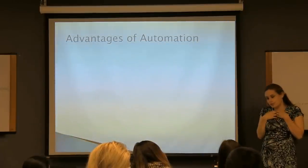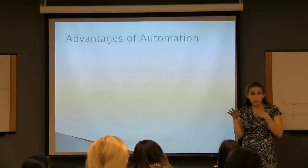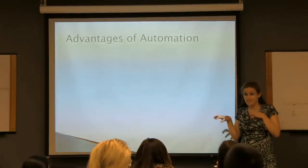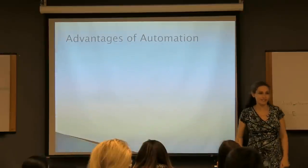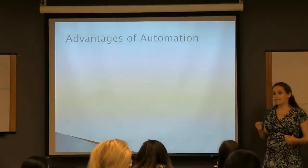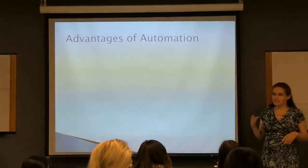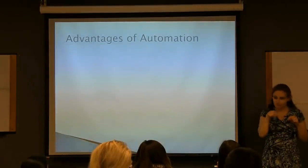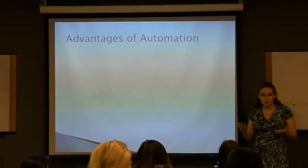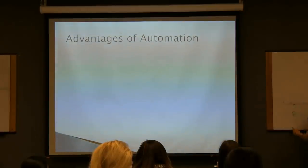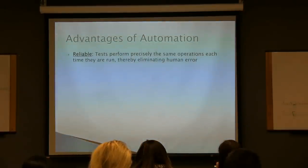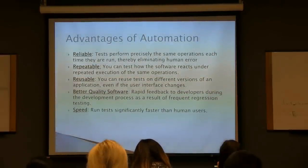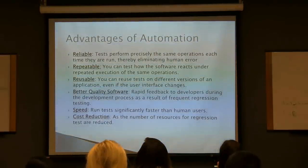For example, if I already know a URL of something, I'm not going to go through six different menus to get there - I'm just going to type it in. But a computer doesn't take that shortcut. It will still go menu, menu, menu, menu, menu, menu. So we have: reliable, repeatable, reusable, better quality software, speed, and cost reduction.